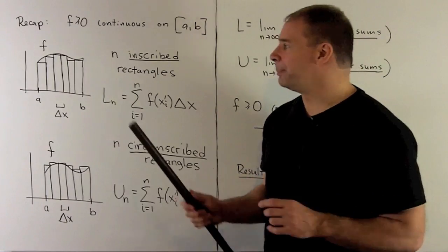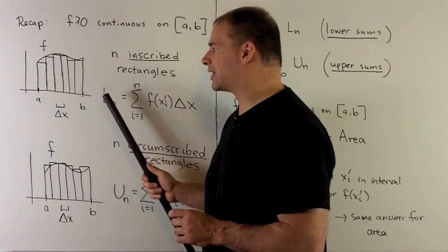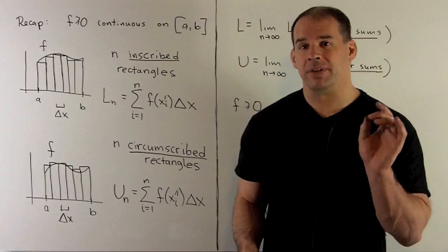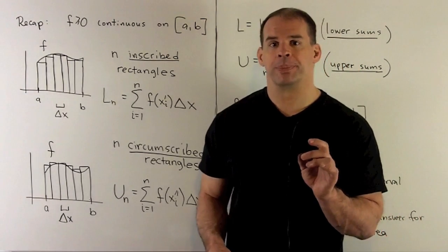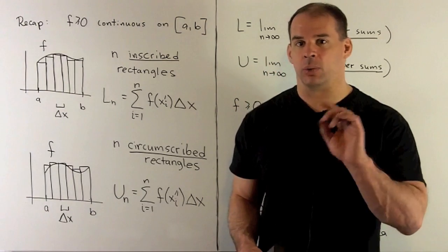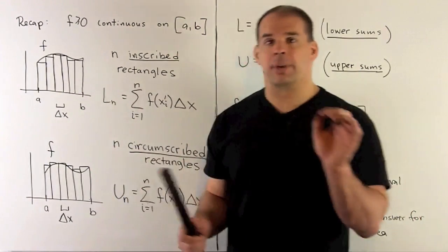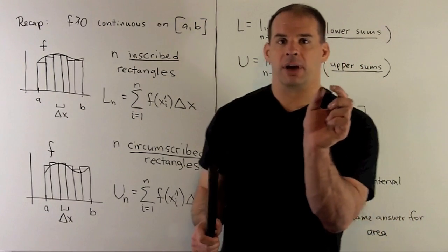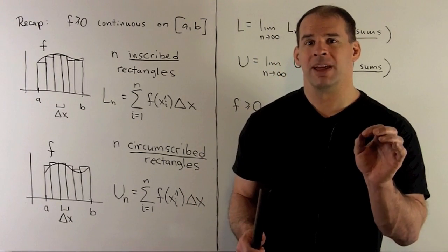We want to approximate the area of this region here — below the graph of f, above the x-axis, chopped off at a and b. We'll do that by filling the region in with rectangles. To get our rectangles, we're going to take our interval, chop it up into n subintervals of equal length, then pick a point in each subinterval and apply our function f. Each subinterval gives us the base of the rectangle, and we apply f to a point in the subinterval — that gives us the height.